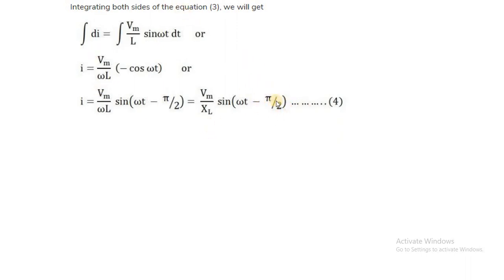This minus pi by 2 indicates that the current waveform has a phase angle difference of 90 degrees, and that too minus. So the current is having minus 90 degrees angle. When the voltage is at the reference axis, we take the current 90 degrees clockwise, meaning the current is lagging the voltage by 90 degrees. The voltage waveform starts its positive half cycle at omega t equal to 0, but the current waveform starts its positive half cycle 90 degrees after omega t equal to 0.